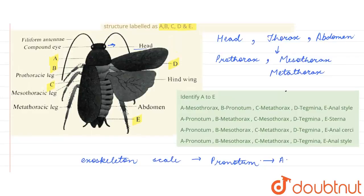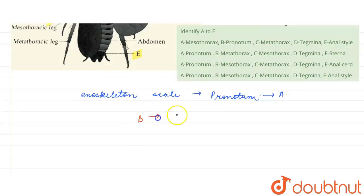Then B in this figure is below prothorax, right? So that will be mesothorax. So B here is mesothorax.